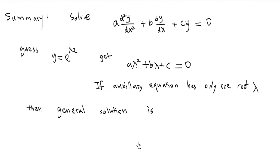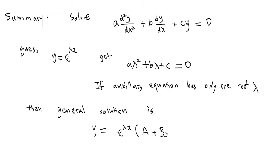There is a standard procedure to follow. For a·d²y/dx² + b·dy/dx + c·y = 0, guess y = e^(λx) to get the auxiliary equation aλ² + bλ + c = 0. If this auxiliary equation has only one repeated root λ, then the general solution is y = e^(λx)·(A + Bx).